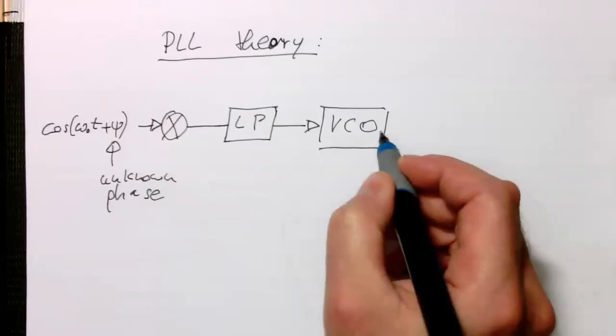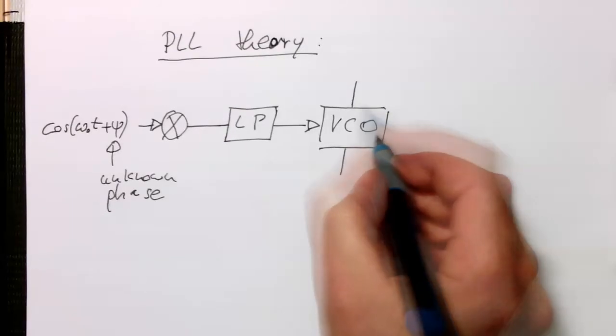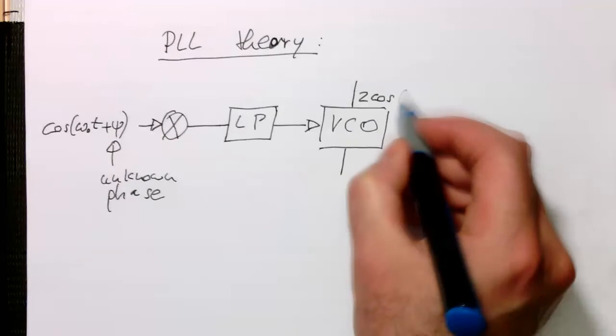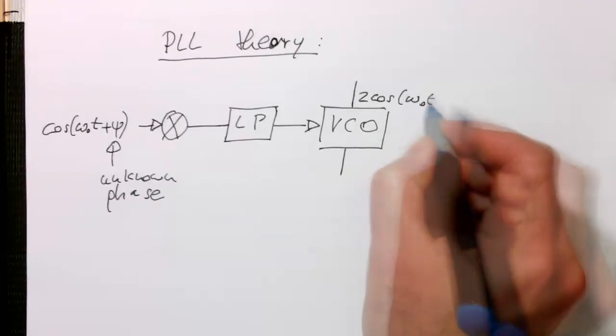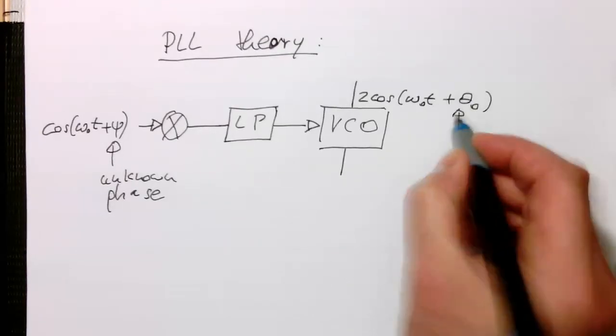The VCO, as we now have, has two outputs when we think of our codec algorithm. So one is two cosine of omega zero t plus theta zero. So that's the unknown phase.